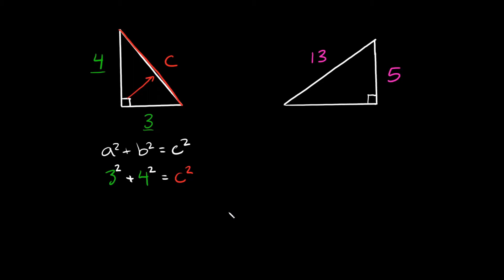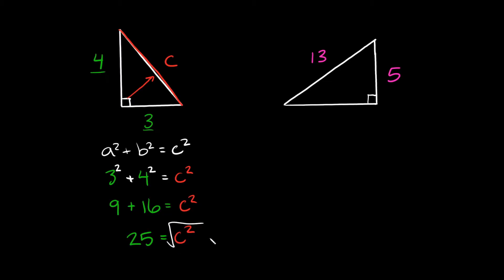Simplifying: three squared equals three times three, which is nine. We add that to four squared, which is four times four, which is 16, and set that equal to C squared. So nine plus 16 equals 25, which equals C squared. To solve for C, we take the square root of both sides to undo the exponent. The square root and the exponent cancel each other out, leaving C equal to the square root of 25, which is five.